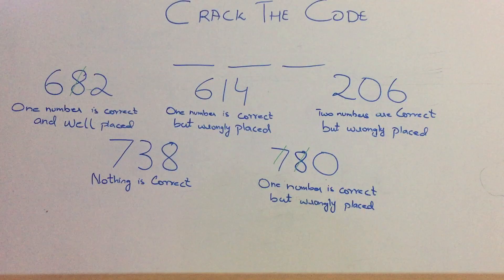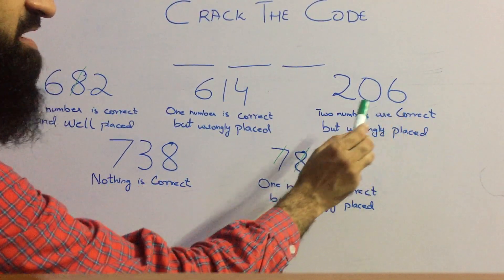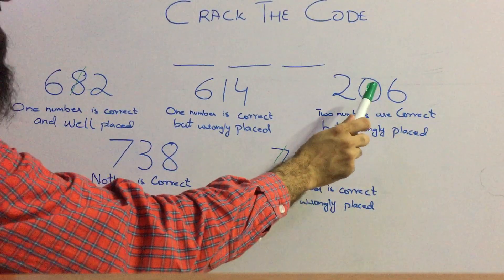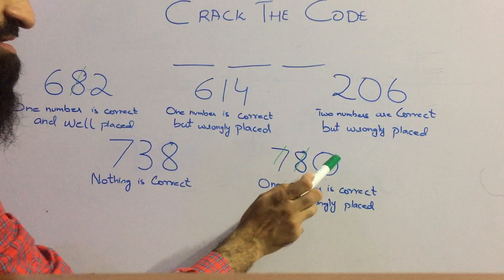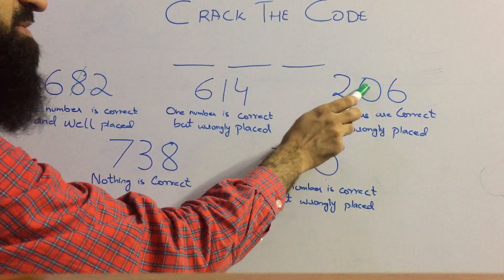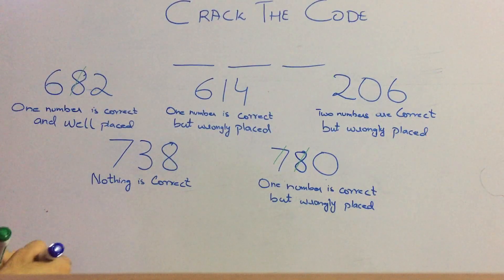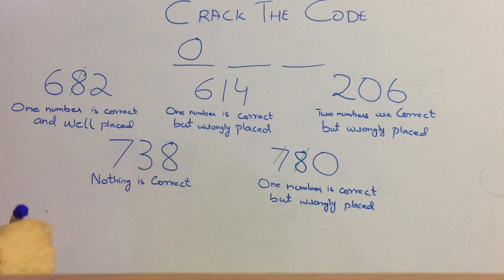Now, two numbers are correct in this third hint - two numbers are correct but wrongly placed. One of them is 0. So the 0 is wrongly placed at the third position. The 0 is wrongly placed at the second position. This means the 0 should be at the first position. So we write it down over here.